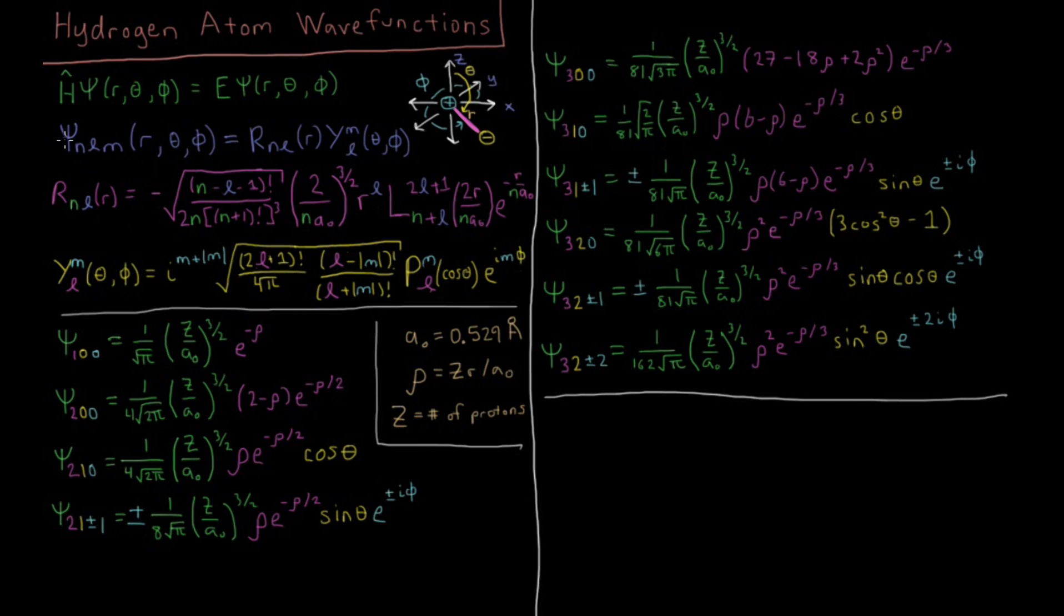These wave functions have three quantum numbers: n, l, and m. This can be separated into a function of r and a function of theta and phi.